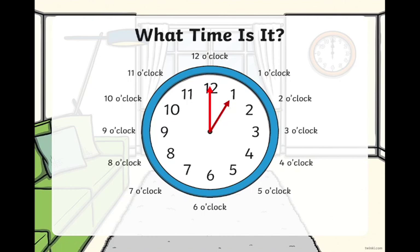Let us do another example. Now we have the minute hand and the hour hand. The minute hand is still pointing at the 12, so it is an o'clock. The hour hand is pointing at the 10. So we say it is 10 o'clock.